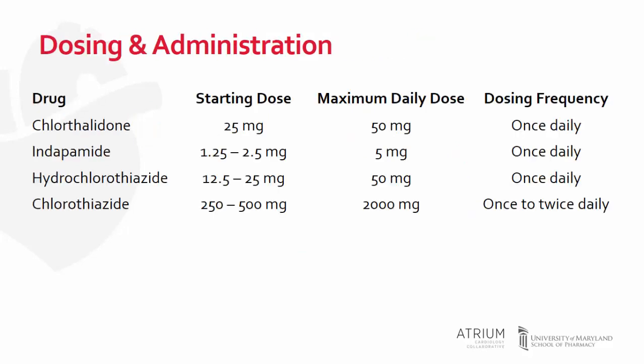This table lists the various thiazide diuretics that we use, as well as their typical starting and maximal daily dose. It is worth noting that these agents vary in potency. For example, hydrochlorothiazide is a much weaker diuretic than chlorthalidone, and for that reason, the amount of electrolyte disturbances that you can see with each of these agents varies accordingly, depending on the dose that is being used.